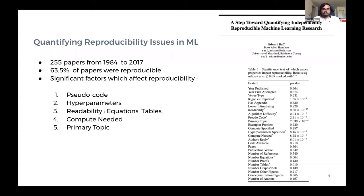He further went on to reproduce 85% of results after getting assistance from the original authors, compared to only 4% when the authors didn't respond. So he could only reproduce 4% of papers without any author suggestions. He came up with significant factors affecting reproducibility: pseudocode, hyperparameters, readability especially in equations and tables, and the amount of compute needed. One limitation is this work was primarily done by one author over five years, which might introduce certain biases.